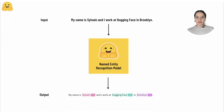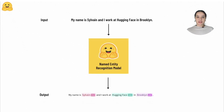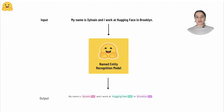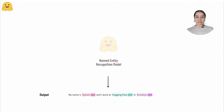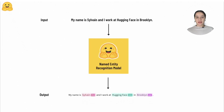Let's take a quick look at the named entity recognition task. The goal of this task is to find entities in a piece of text, such as person, location, or organization. This task is formulated as labeling each token with one class for each entity and another class for tokens that have no entity.